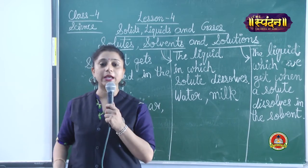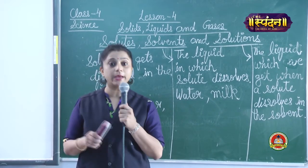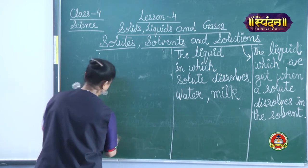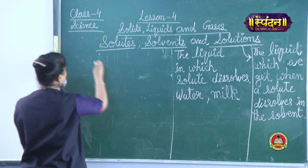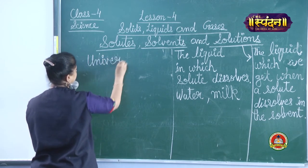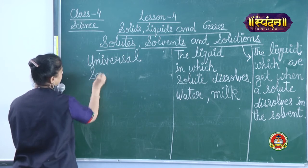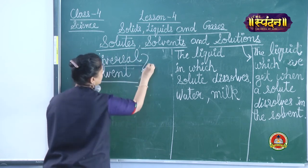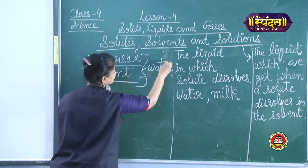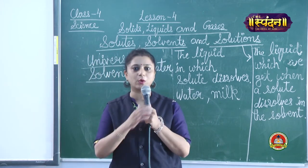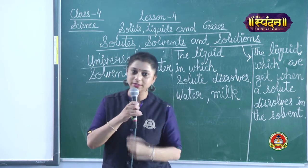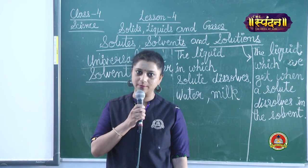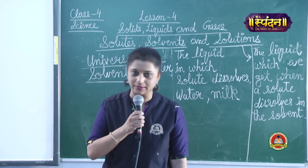You all know that we can mix many things in water — many things dissolve in water. That is why water is called a universal solvent. It is called universal solvent because many solids can dissolve in it. This is the end of the lesson. I hope it is clear to all of you. Just go through the lesson, read it at least two times, and I am sure you will understand it. Thank you so much.